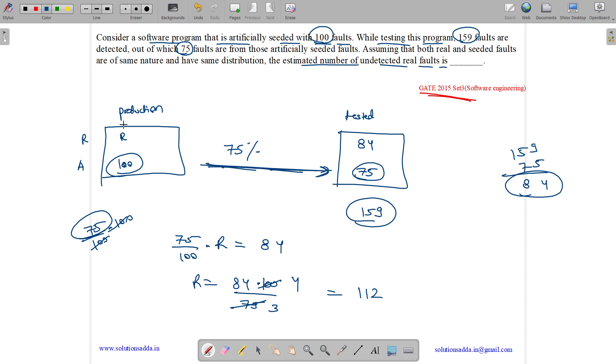Now, which means we have total 112 real faults, out of which 84 are identified. So non-identified: 100 minus 75, 25 artificial are not identified, and 112 minus 84, which is equal to 28.